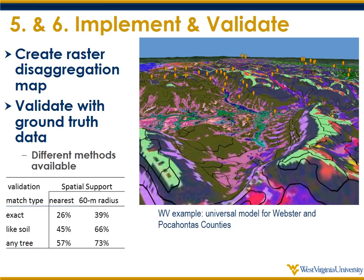The last step of this workflow is to implement and validate your results — essentially creating a raster disaggregation map. On the right is the part of the West Virginia study where we did that. Different colors represent disaggregated soil series types, and the black lines overlaying are the original SSURGO polygons. For validation, we had independent headcuts represented by balloon markers at those locations. We used different spatial supports — exact matches, or a radius around validation points. We also ran multiple trees, so you can look at the underlying ensemble to see if part of your model matched.